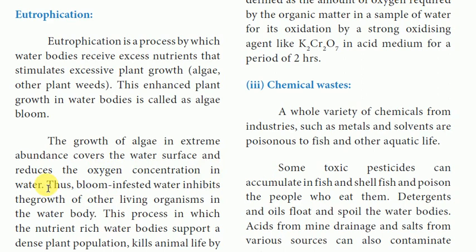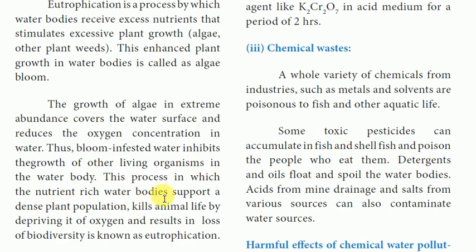The growth of algae covers the water surface and reduces the oxygen concentration in water. Bloom-infested water inhibits the growth of other living organisms in the water body. This process, in which nutrient-rich water bodies support dense plant populations, kills animal life by depriving it of oxygen and results in loss of biodiversity. This is known as eutrophication.